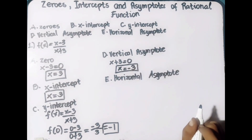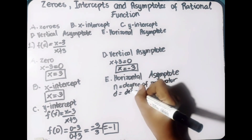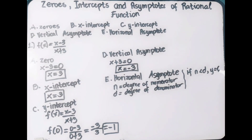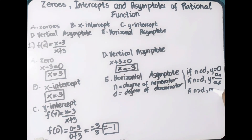Last is the horizontal asymptote. To find it, we identify n, the degree of the numerator, and d, the degree of the denominator. If n is less than d, the horizontal asymptote is y equals 0. If n equals d, the horizontal asymptote is y equals the leading coefficient of the numerator over the leading coefficient of the denominator. If n is greater than d, there is no horizontal asymptote.